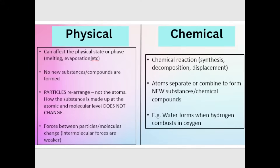Physical change is something that can potentially affect the physical state or phase of a substance. By phase, it could be a substance going from a solid to a liquid or a liquid to a gas. It could also involve something like the breaking or division of a substance into many smaller pieces — for example, crushing powder, crushing a can, breaking glass. In physical change, no new substances or compounds are formed; the particles rearrange, not the atoms.